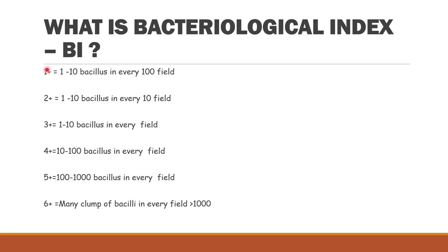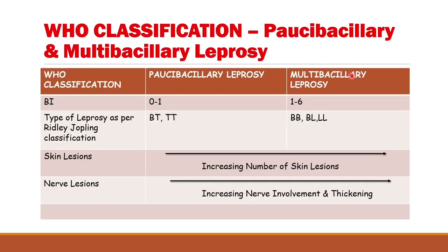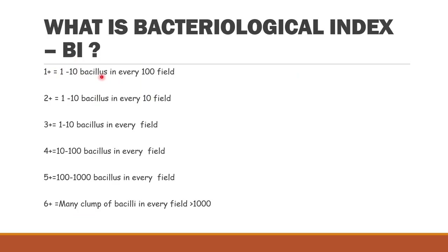The bacteriological index refers to the number of bacilli per field on special stains like the Fite-Faraco stain or AFB stain. 1+ means 1–10 bacilli in every 100 fields; 2+ means 1–10 bacilli in every 10 fields; 3+ means 1–10 bacilli in each field; 4+ means 10–100 bacilli in every field; 5+ means 100–1000 bacilli in every field; 6+ means more than 1000 or clumps of bacilli in every field, which is usually observed in histoid and lepromatous leprosy.